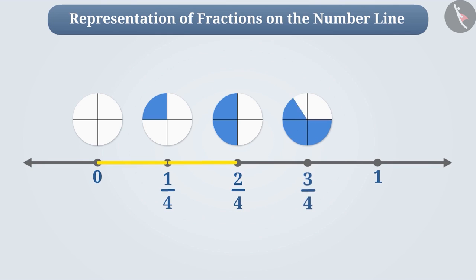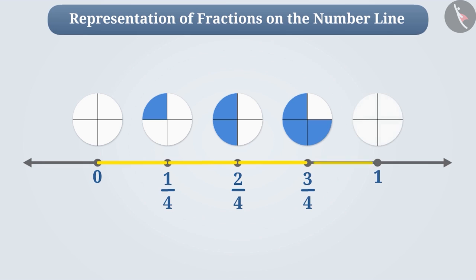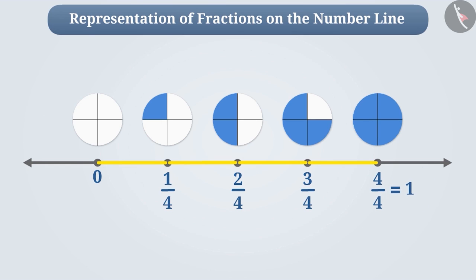Similarly, we can represent fraction three by four on the number line by taking three parts. If we take four equal parts out of four parts, then the fraction will be four by four, which is equal to one.